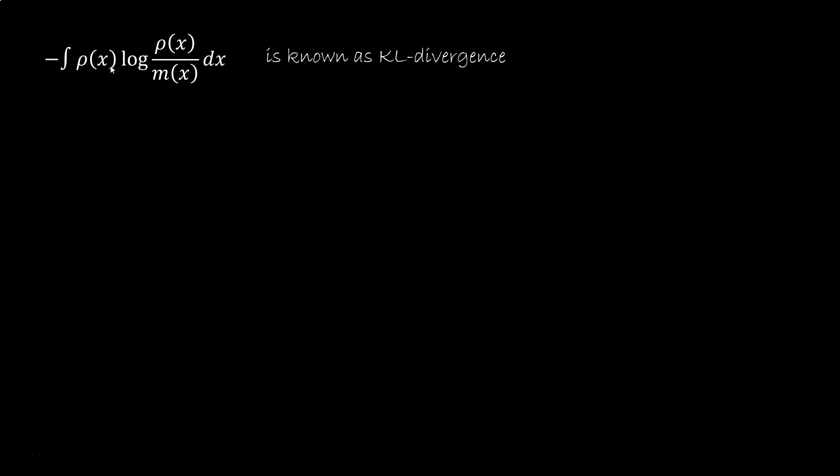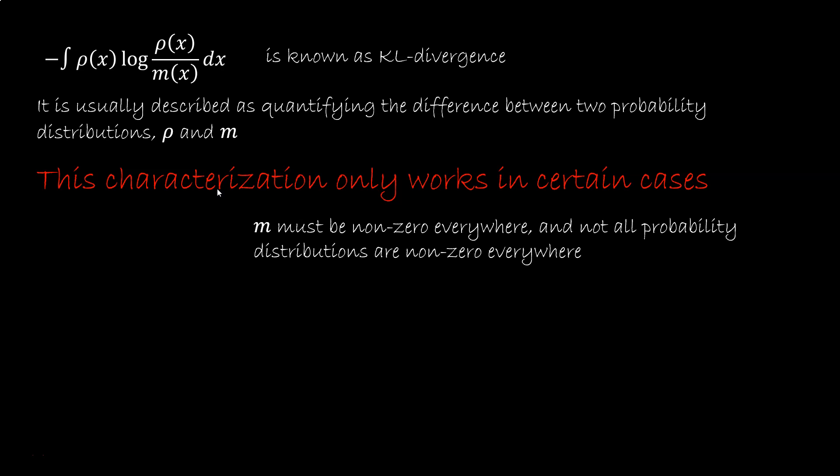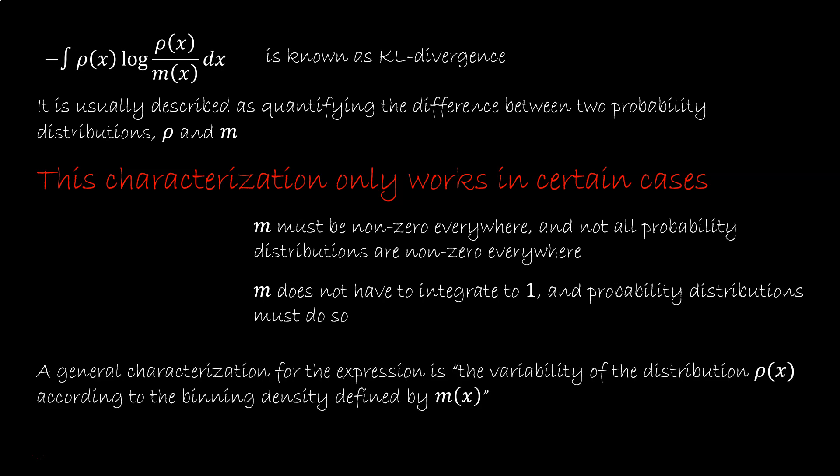The expression minus rho log rho over m is known as KL divergence. It is usually described as quantifying how different two probability distributions, rho and m, are, and in many cases that's how it's used. But this does not work in general. Note that, for the expression to work, m must be non-zero everywhere, and not all probability distributions are non-zero everywhere. Uniform distributions over an infinite range, for example, must be zero somewhere. This means that, for example, you cannot define the KL divergence on the space of all probability distributions. So you will have problems using the KL divergence as a fundamental expression because it forces you to throw out some cases. The other issue is that m does not have to integrate to 1, and probability distributions must do so. A more general characterization of the KL divergence is the variability of the distribution rho according to the bin density defined by m.